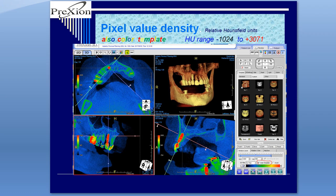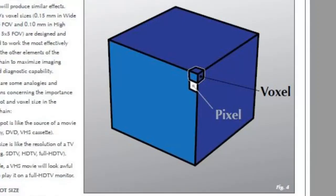In this video, we will discuss the methods of how to obtain pixel value density, also referred to as relative Hounsfield units. A pixel is the smallest unit on the screen and where we derive the density value. A voxel is simply the pixel value occupying a volume of 3D space.